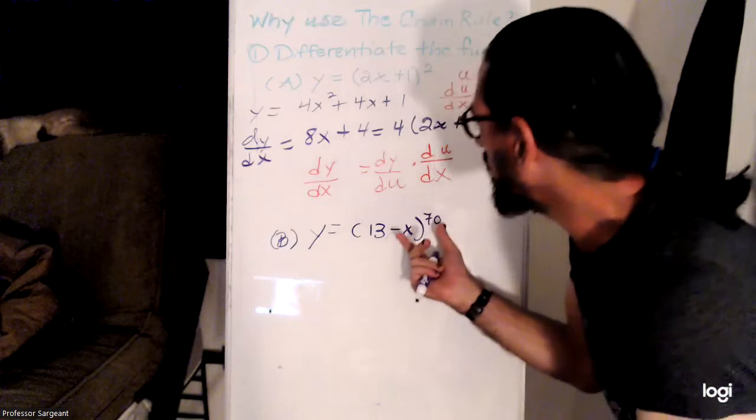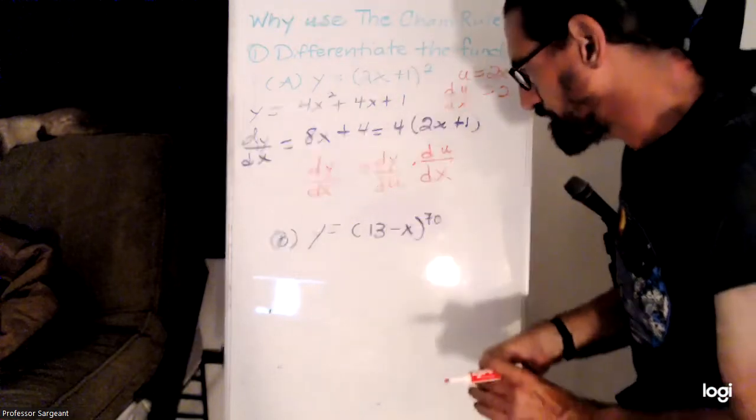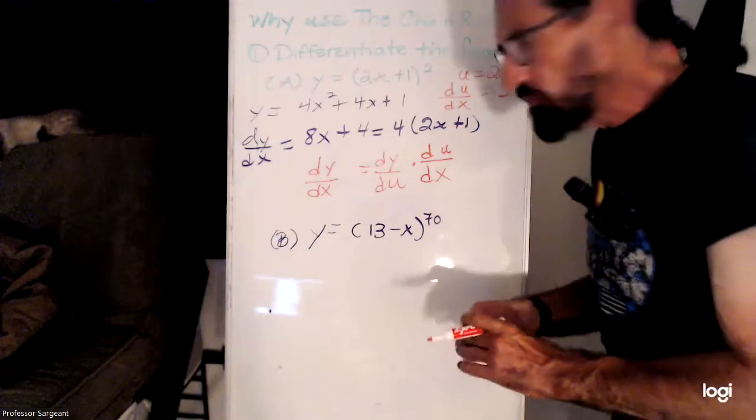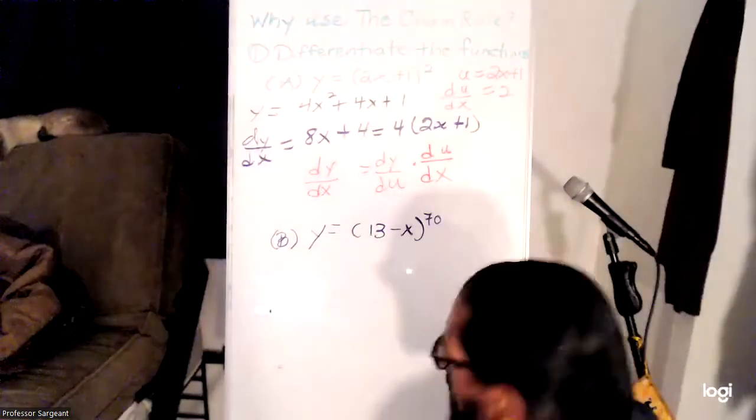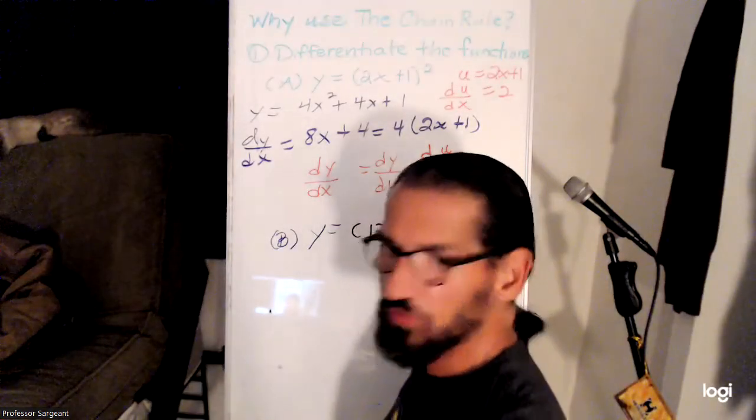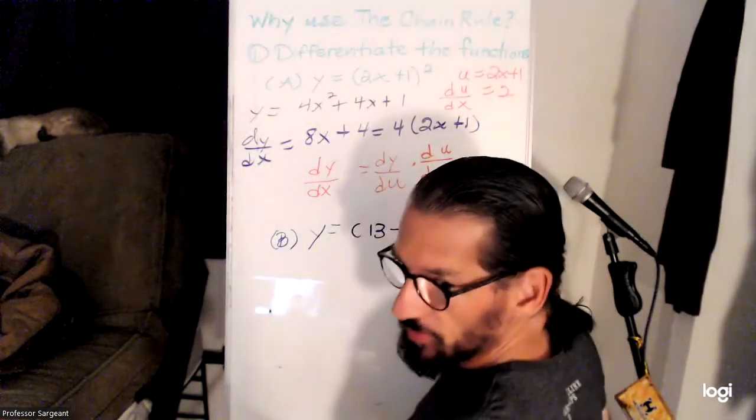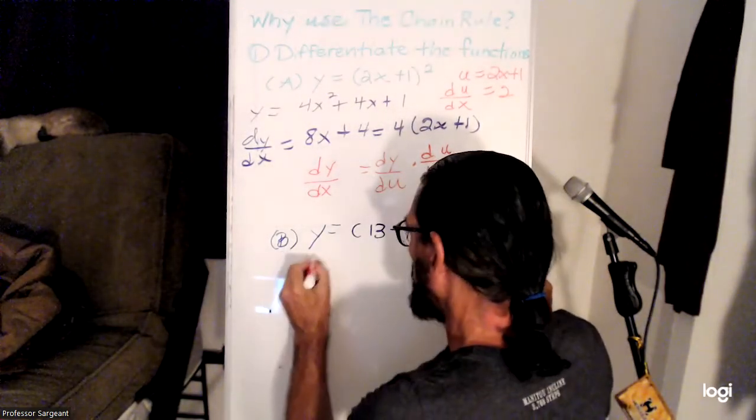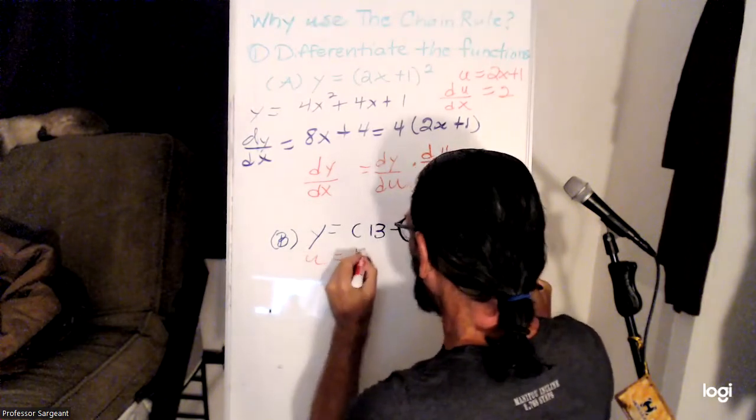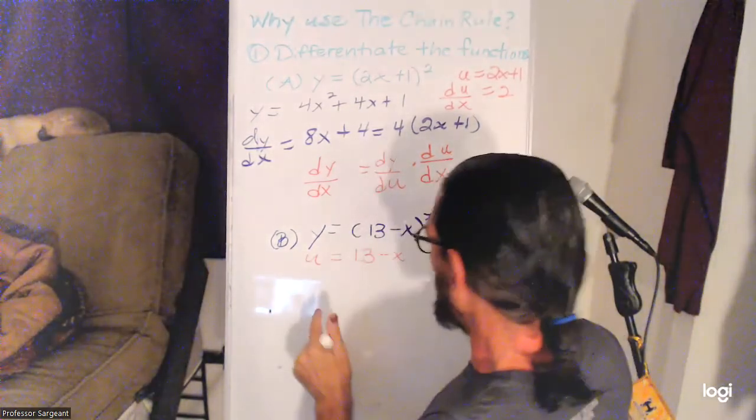One more than how many we had inside. So rather than do that, which would provide multiple opportunities for making a mistake anyway, there is a formula for it though. Take u to be 13 minus x, so its derivative is negative 1.